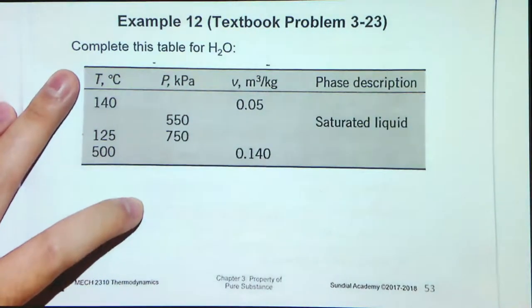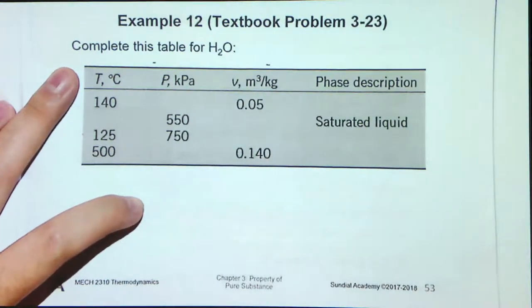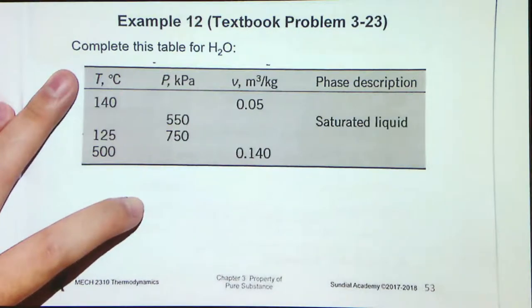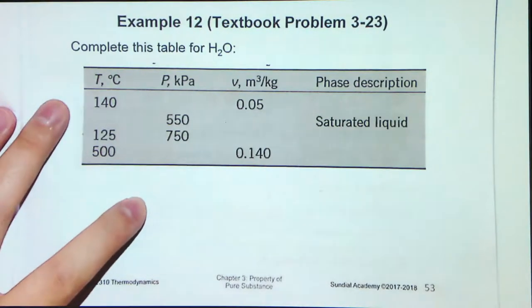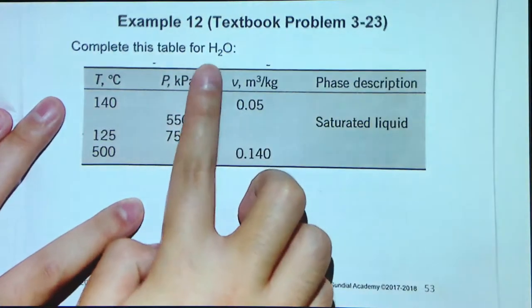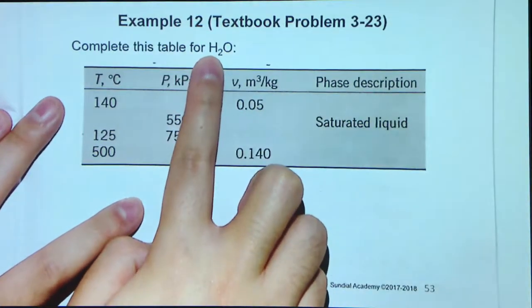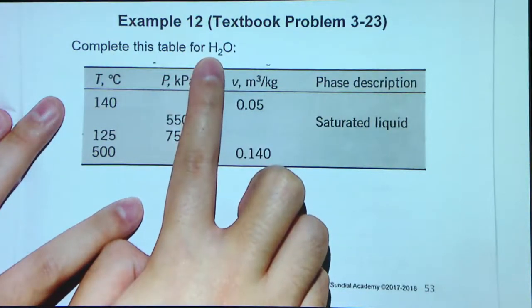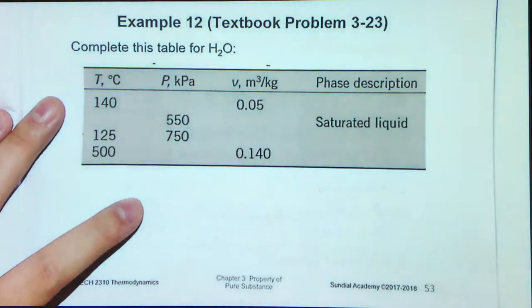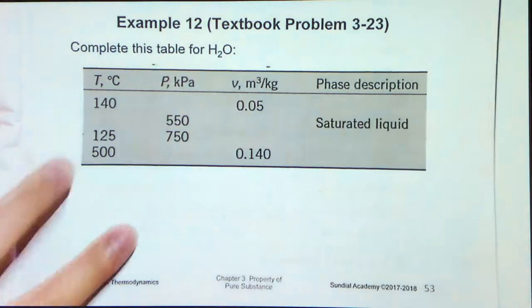Let's go to Example 12. This example is a very good example for you to consolidate what we have learned in section 3.4. It is for water — don't go to the wrong table, it's for water. So spend some time to complete this table. Let's see the solution.